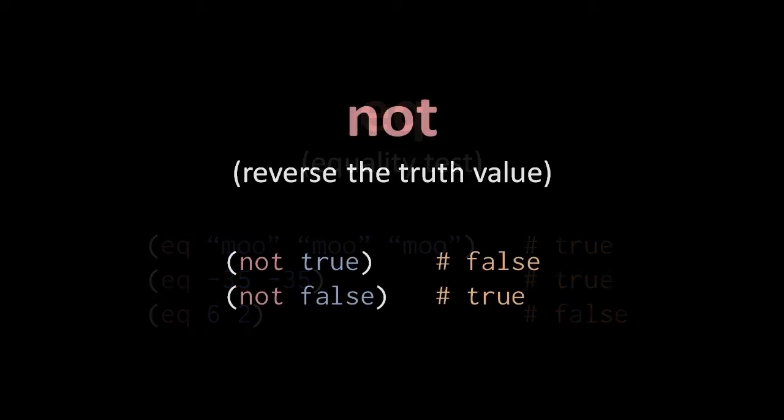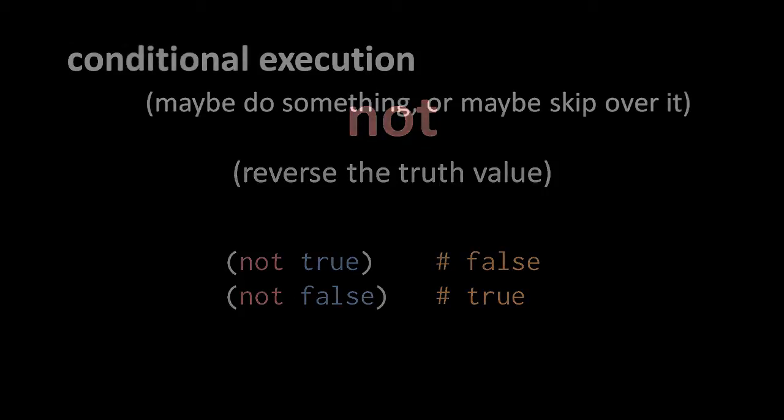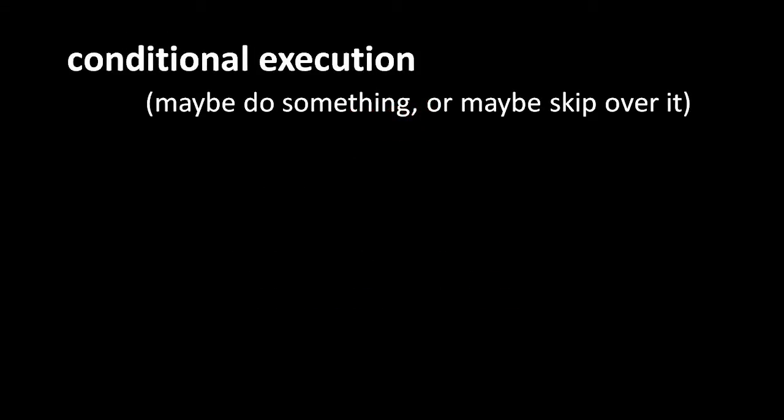The not operator takes a single boolean value and returns the reverse truth value, so not true returns false and not false returns true. These two operators, eq and not, come in useful for what we can call conditional execution.